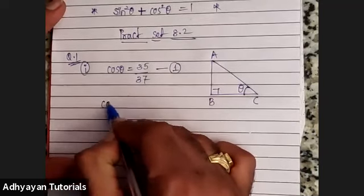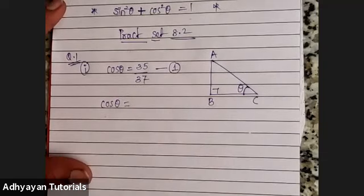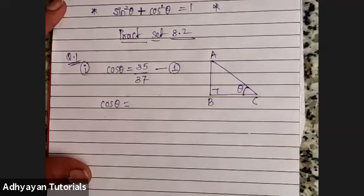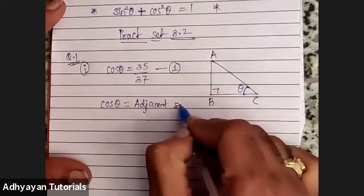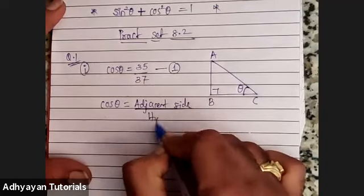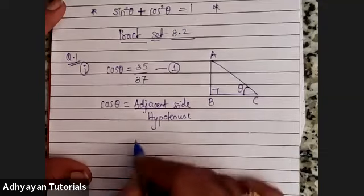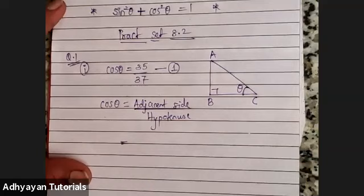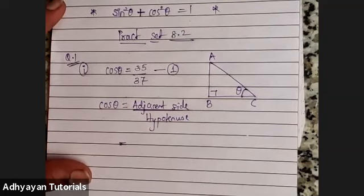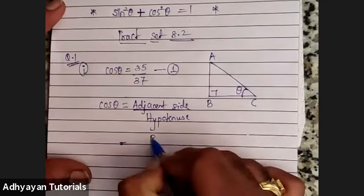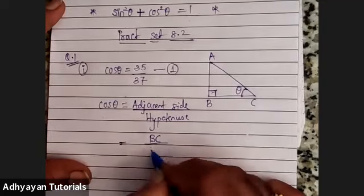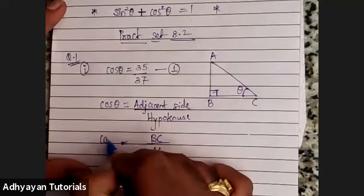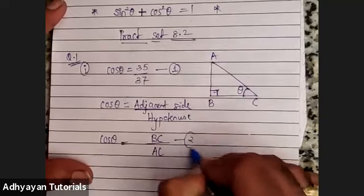As per the ratio — the formula we spoke in the last class — cos θ = adjacent upon hypotenuse. The adjacent side to theta is BC. Upon the hypotenuse, which is always the side opposite to 90°, which is AC. So BC upon AC is cos θ. I mark it as equation 2.